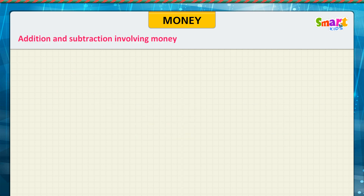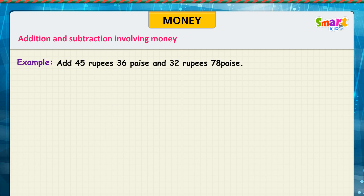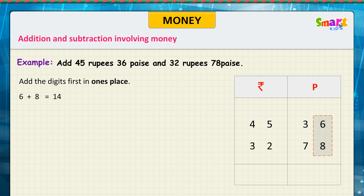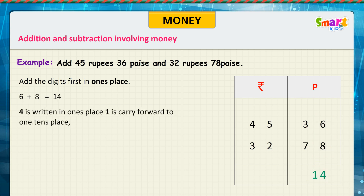Addition and subtraction involving money. Example: add 45 rupees 36 paise and 32 rupees 78 paise. Look at the problem. Add the digits first in the ones place. 6 plus 8 is equal to 14. 4 is written in the ones place, and 1 is carried forward to the tens place.